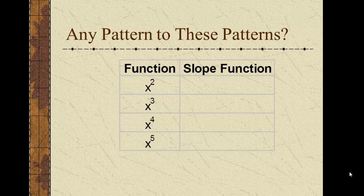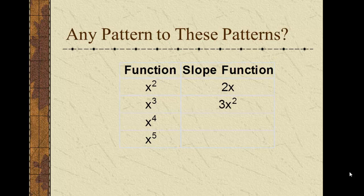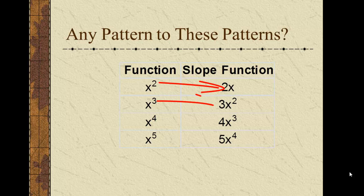Now let's find a pattern to these patterns. When the function was x squared, the slope was 2x. When the function was x cubed, the slope was 3x squared. What do you think the slope of the function x to the fourth is going to be? It just follows the pattern. The exponent becomes the coefficient in front of x, and the exponent is reduced by one. So the slope of x to the fifth is 5x to the fourth, and so on.